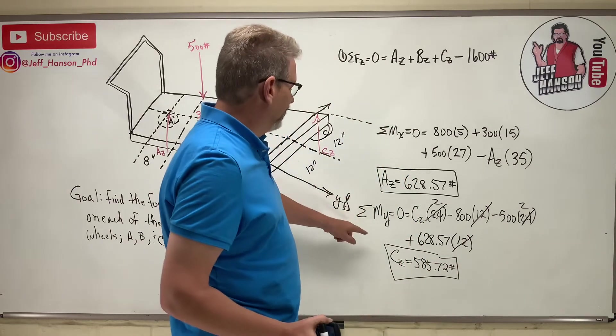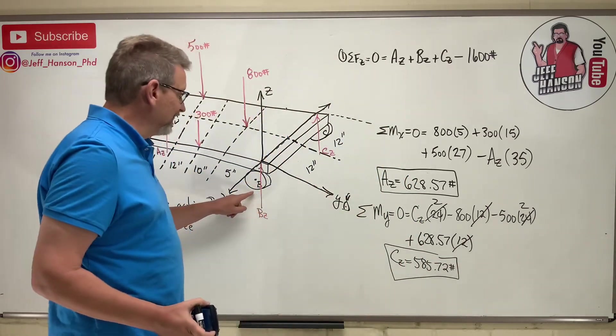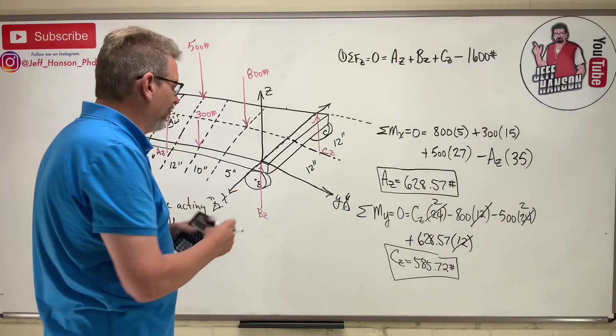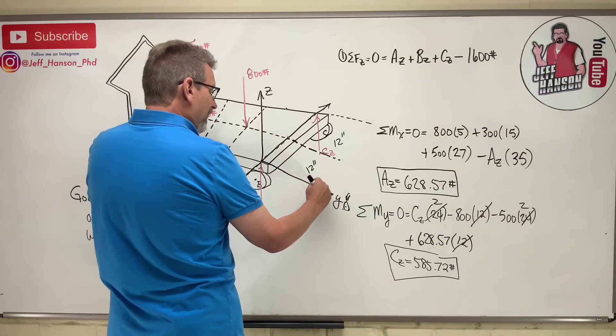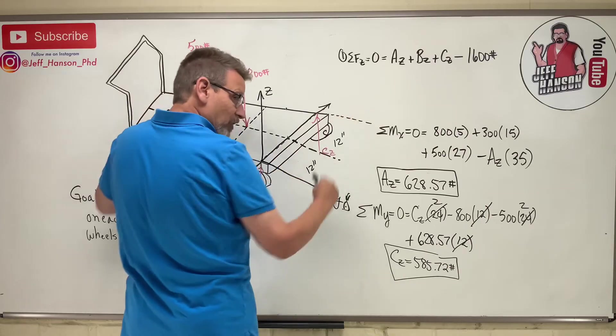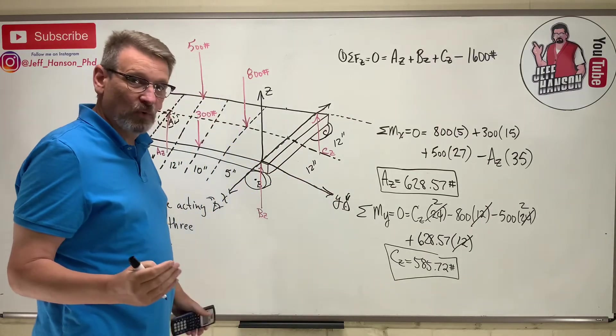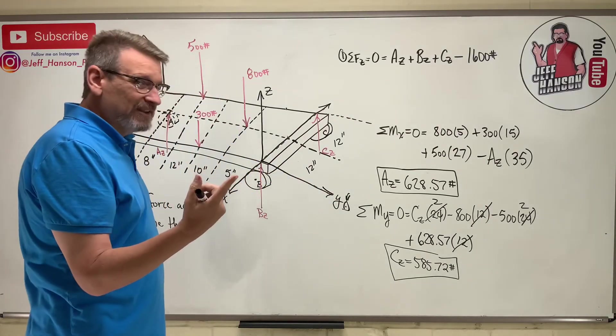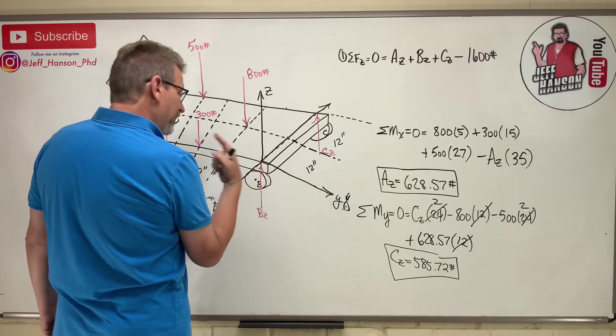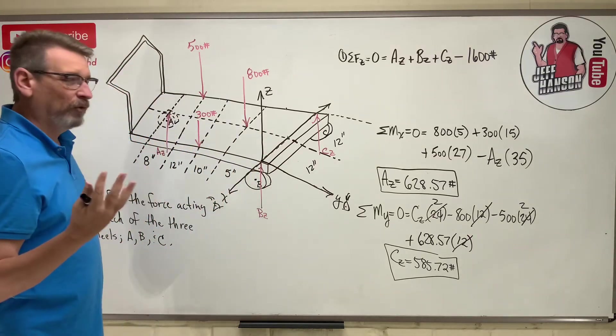Okay, so how do I find the last one, which is like Bz? Now you could do this a couple of ways. I could take my y-axis, I could erase it again and put it over here at the other edge of the cart and write the moment about the y again. I can't write the moment about the z, right?